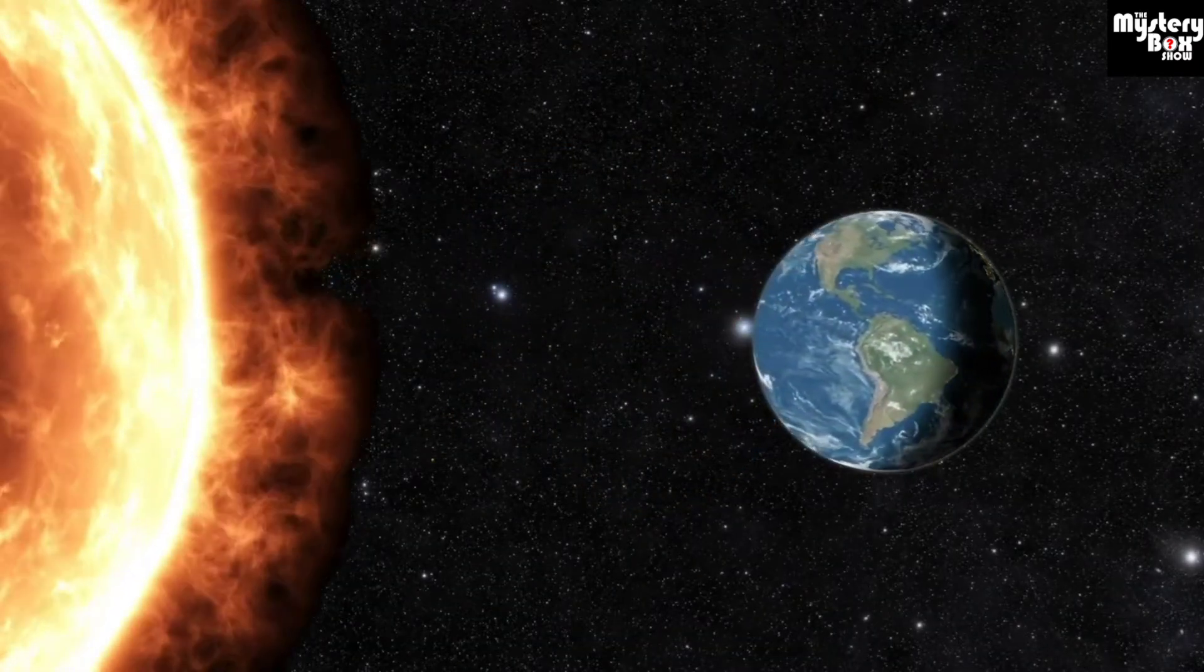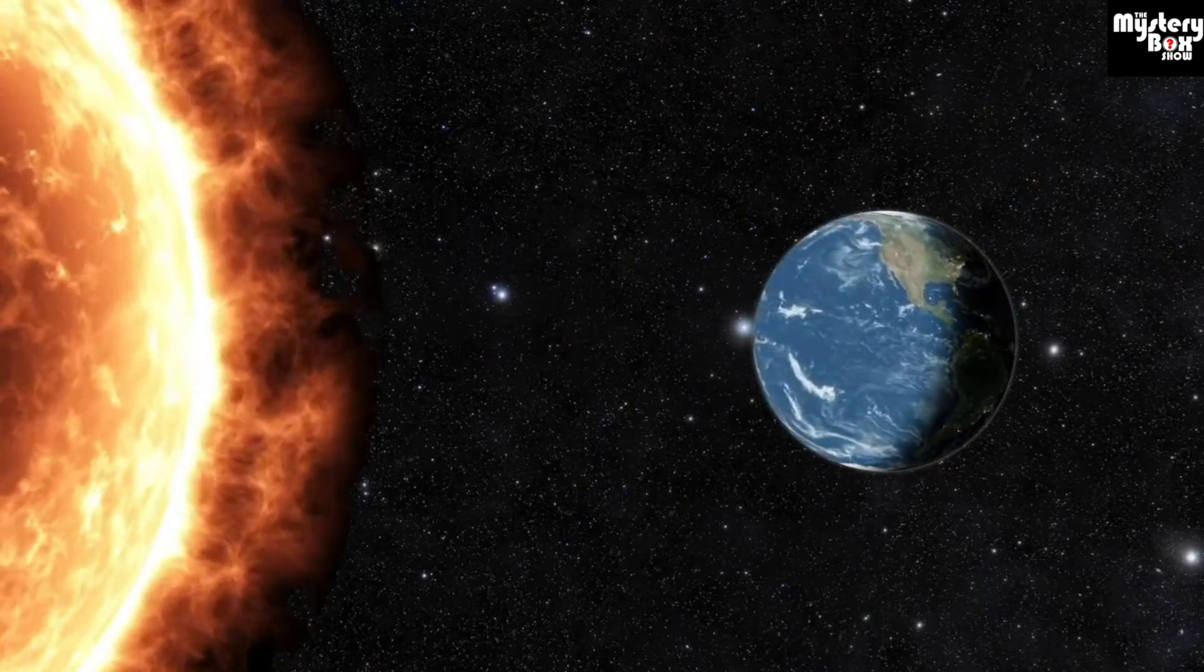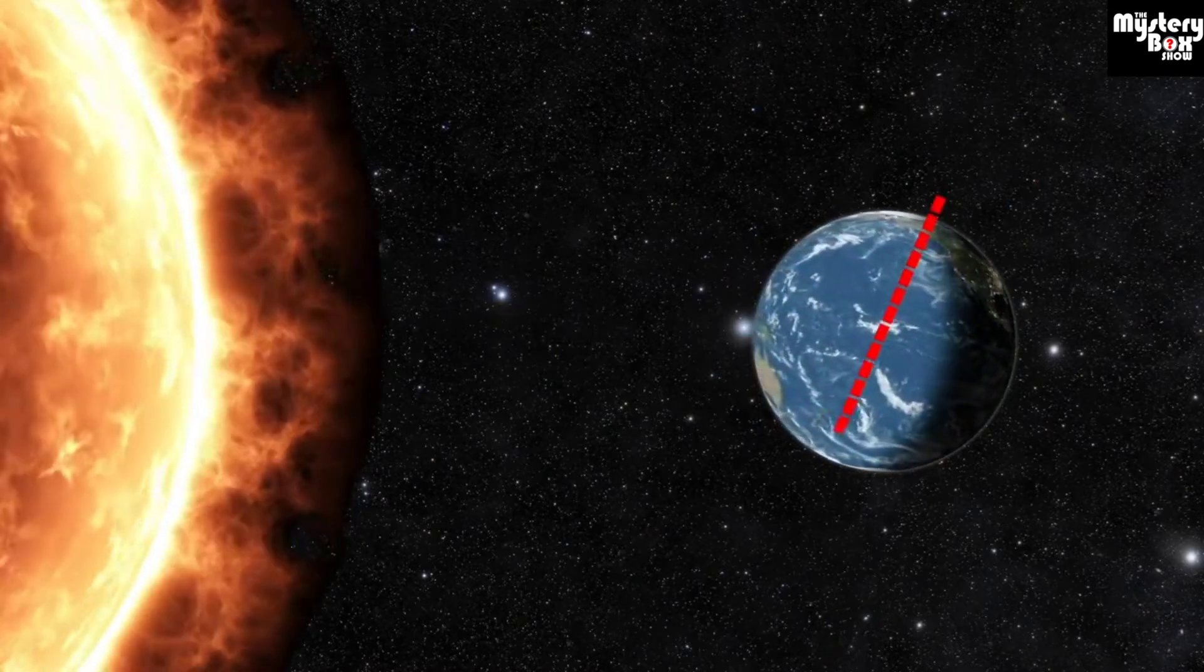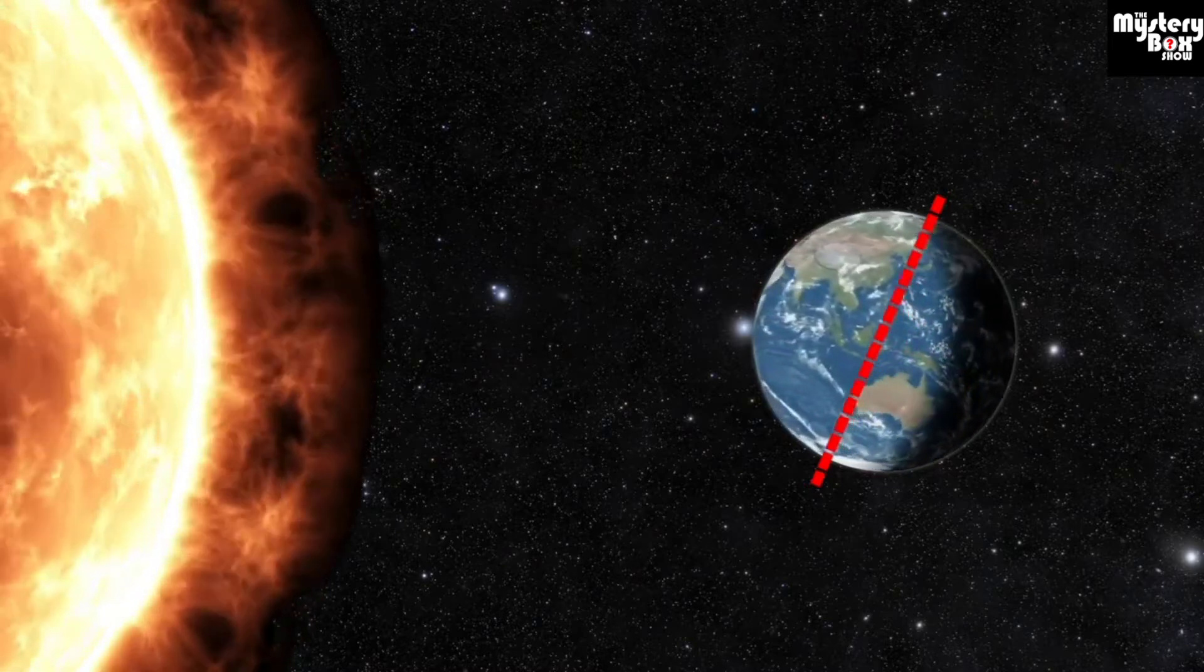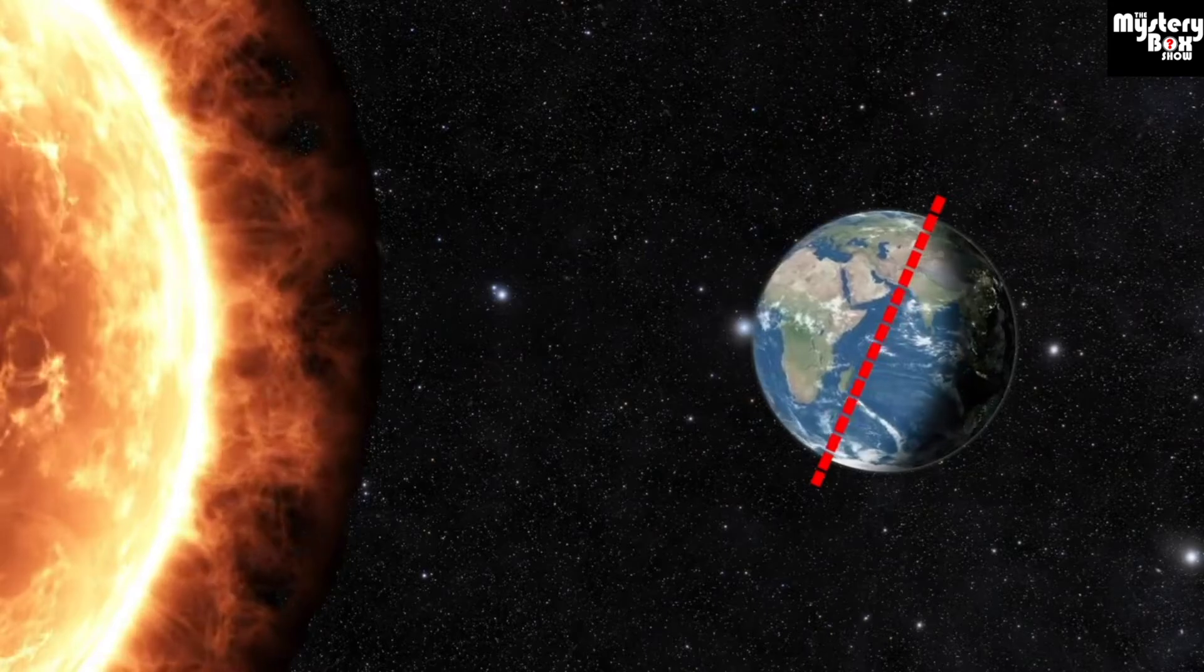One way the Earth moves is by spinning on its axis. An axis is an imaginary line that runs through the Earth's center. This spinning movement on its axis is called a rotation.